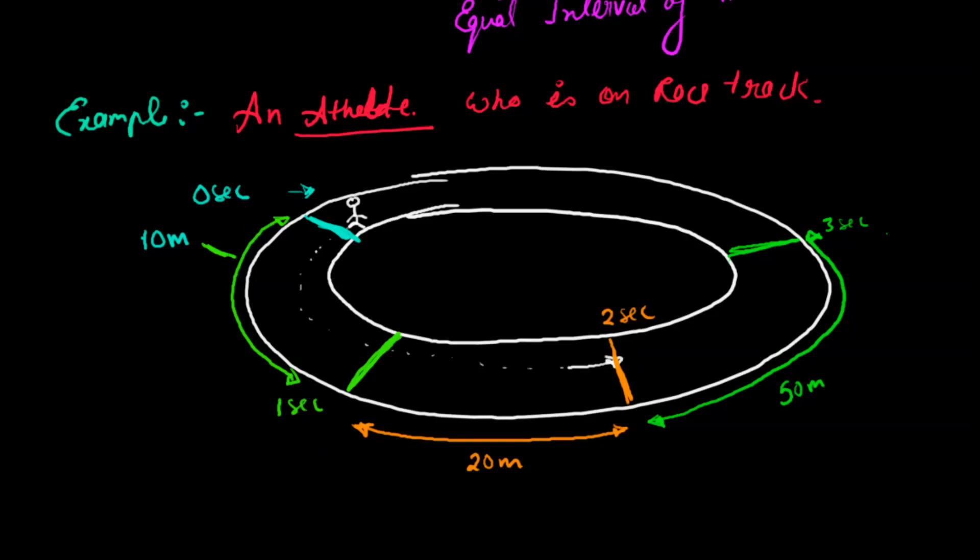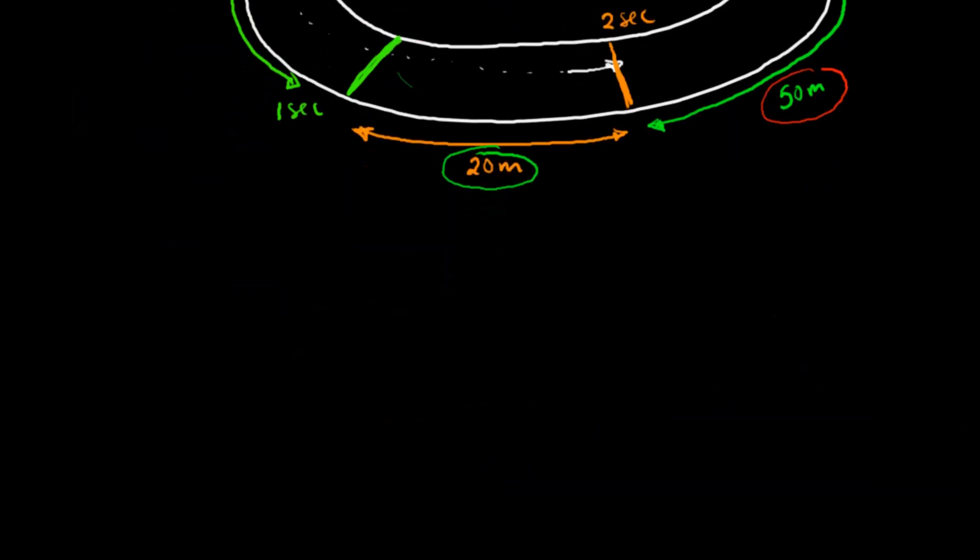When our race started, at zero seconds, I clicked the camera. My racer, the athlete, is standing on the race track. At time zero seconds, he had zero distance. After one second, he covered 10 meters. After again one second, he covered 20 meters. Then after one second, he covered 50 meters. So in this way, I have a different pattern: sometimes 10 meters, sometimes 20 meters, sometimes 50 meters. I want to make this graph in a plot.